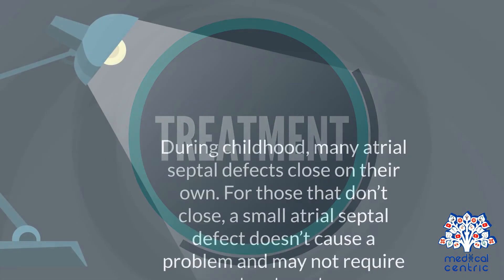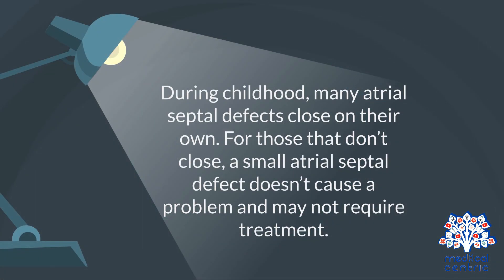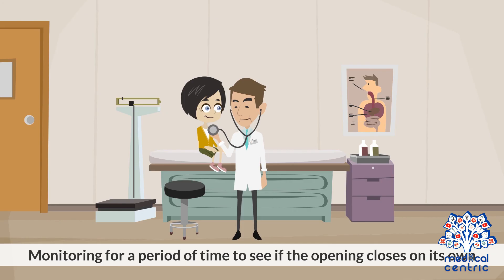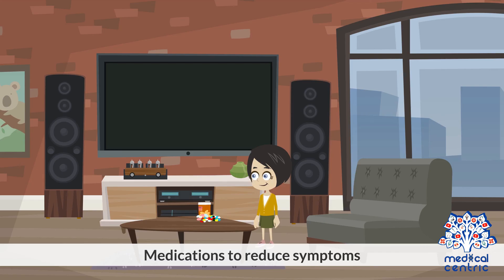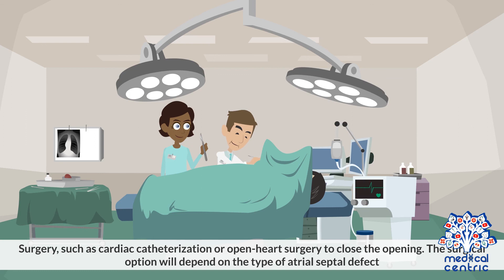During childhood, many atrial septal defects close on their own. For those that don't close, a small atrial septal defect may not require treatment. If treatment is needed, this may include monitoring for a period of time to see if the opening closes on its own. The doctor will determine if the child needs any treatment depending on the child's condition and presence of any other heart defect, medications to reduce symptoms, or surgery such as cardiac catheterization or open-heart surgery to close the opening. The surgical option will depend on the type of atrial septal defect.